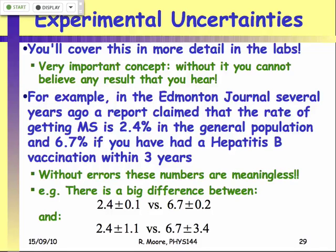The next time you're reading a medical or scientific report and it's all doom, gloom, end of the world — look at the statistics. If numbers are quoted without experimental uncertainties, those numbers are completely without value. If you put in the uncertainties and said 2.4 ± 0.1 versus 6.7 ± 0.2, that suddenly looks like a statistically significant effect. Of course, it doesn't rule out some systematic error — maybe people with hep B are exposed to something else that causes MS.